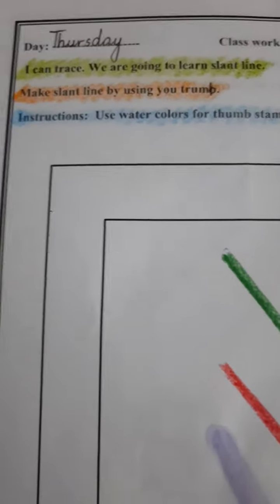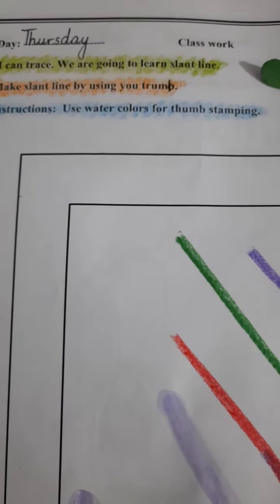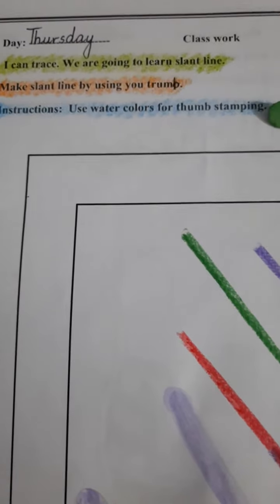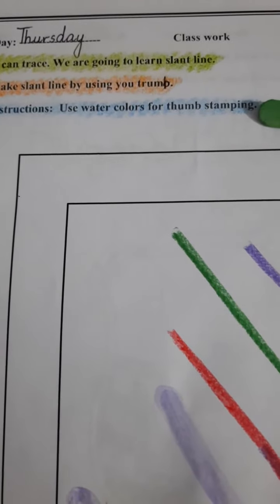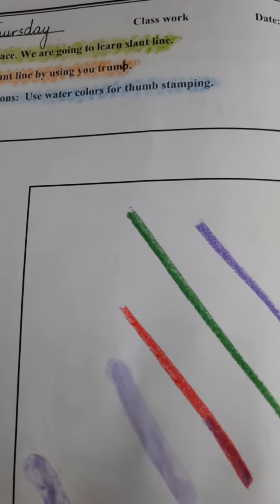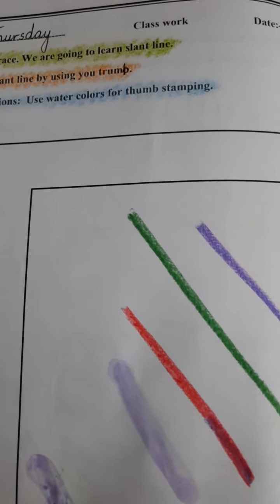Our topic is I can trace. We are going to learn slant line. Make slant line by using your thumb. Instructions: use water color for thumb stamping. Playgroup class, aapko aaj ki working ke liye jo colors required hai, main aapko show karwati hoon.